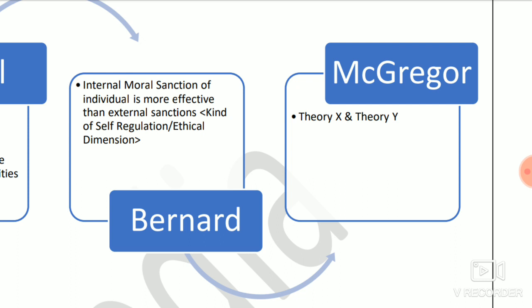Apart from that, McGregor talked about regulation from two sides: Theory X is the theory of direction and control, whereas Theory Y is the theory of participation and self-control. Similarly, you can link Rensis Likert's System 1 to System 4 — System 1 is exploitative authoritative with very high regulation, while System 4 promotes participation. In this way you can link all the participatory management thinkers, and self-regulation will be promoted so people can perform in a better way.